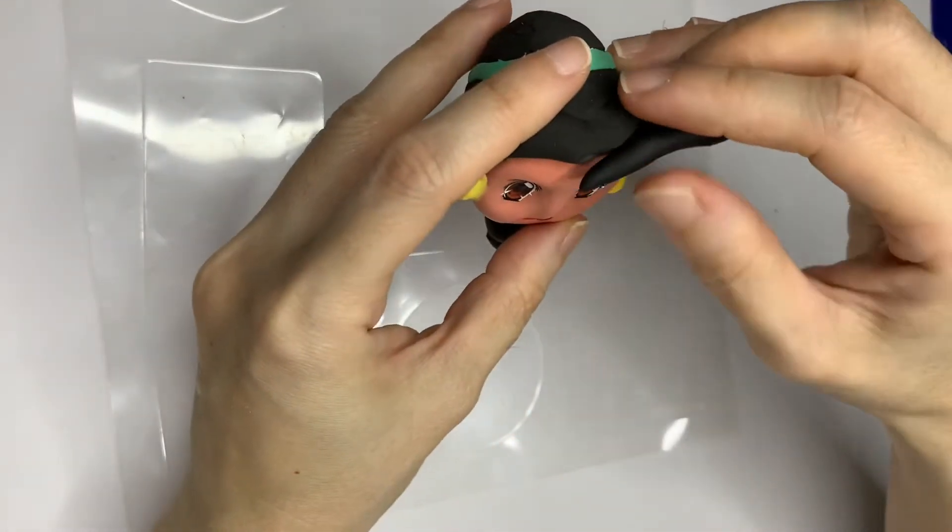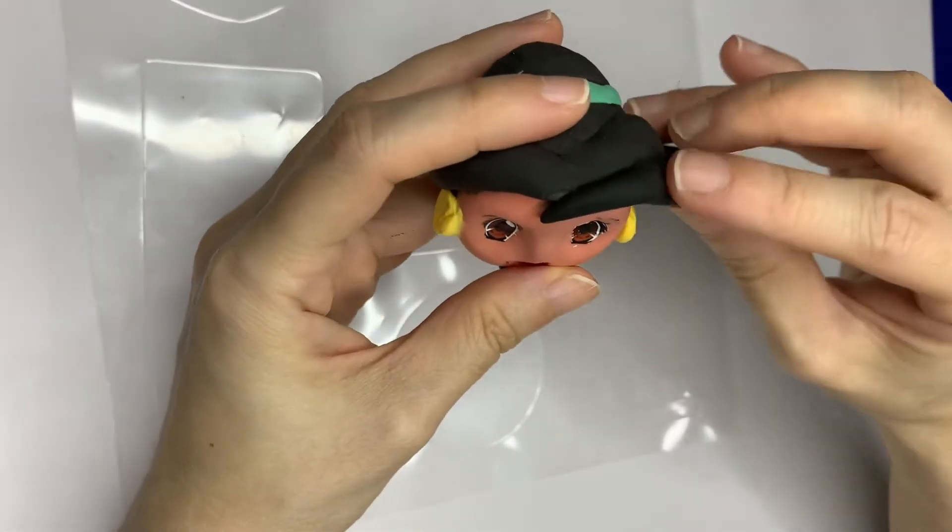Now we will make two thick stripes of hair to cover up half of the earring and the ears part.